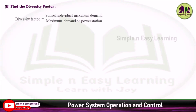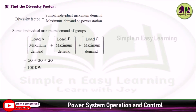Find the diversity factor. Diversity factor equals the sum of individual maximum demands divided by maximum demand on the power station. For Load A, maximum demand is 50 kilowatt; Load B maximum demand is 30 kilowatt; Load C maximum demand is 20 kilowatt. Adding these gives the sum of individual maximum demands. The maximum demand on the power station is 70 kilowatt. Dividing gives 1.428 as the diversity factor.